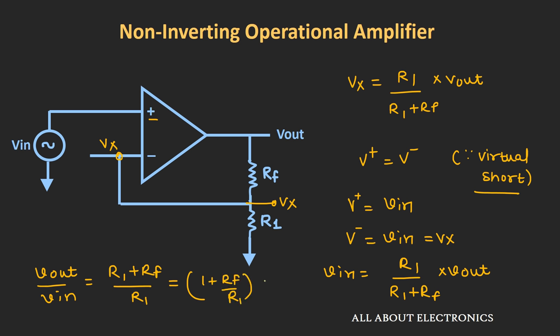That equals 1 plus Rf divided by R1. This is the closed-loop gain of the non-inverting op-amp configuration. So the relation between output and input is 1 plus Rf over R1. Just by controlling the values of Rf and R1, we can control the gain of this op-amp. In this non-inverting op-amp configuration, the output and input will have the same phase.